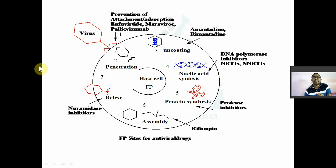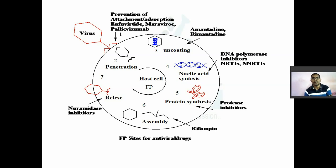If DNA is the genetic material, we call it a DNA virus. If RNA is the genetic material, we call it an RNA virus. For example, the AIDS virus — HIV — is an RNA virus. Coronavirus is also a kind of RNA virus. So if the genetic material of a virus is DNA, it is a DNA virus; if RNA, it is an RNA virus.